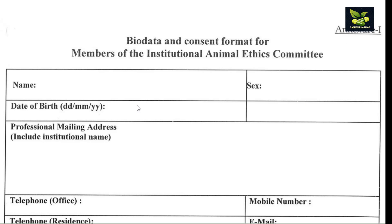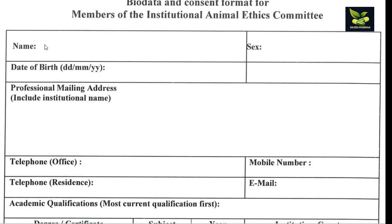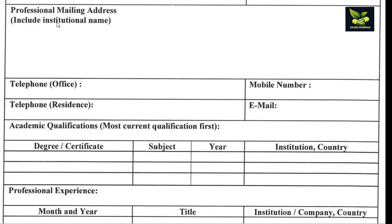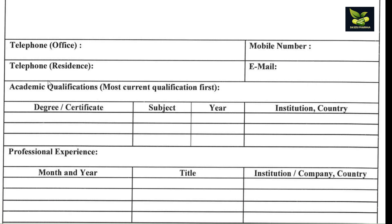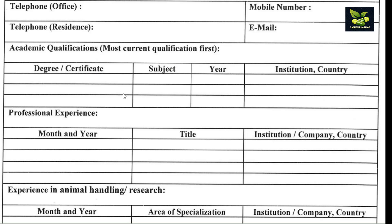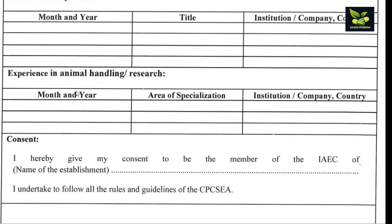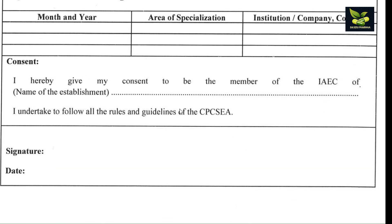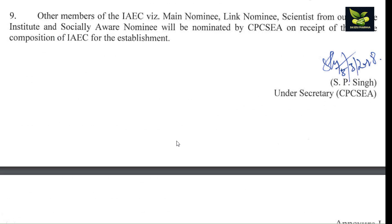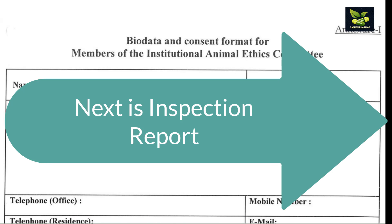This is the bio data and consent form format for IAC members. You have to write: name, sex, date of birth, professional mailing address including institutional name, office telephone number, mobile number, residence telephone, email ID, and academic qualification — which is very important. You must also detail your experience, specifically mentioning experience in animal handling and research. At the end, write 'I hereby give my consent to be a member of the IAC,' followed by your signature and date.